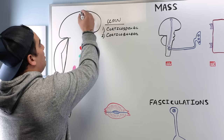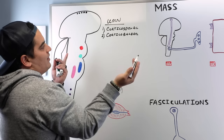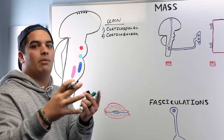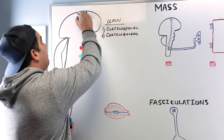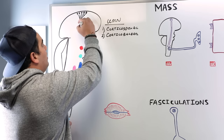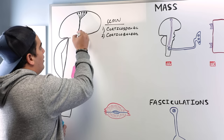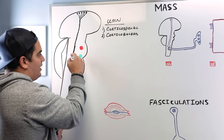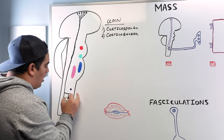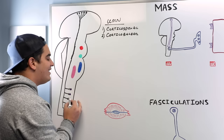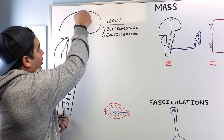Upper motor neurons begin in the cerebral cortex — the motor areas such as the primary motor cortex, premotor, primary somatosensory, and supplementary motor area. Their axons come down via the corona radiata, then through the internal capsule, through the midbrain, through the pons, and at the medulla they decussate. Following the corticospinal tract all the way down, these axons synapse onto lower motor neurons whose cell bodies are in the anterior gray horn of the spinal cord.